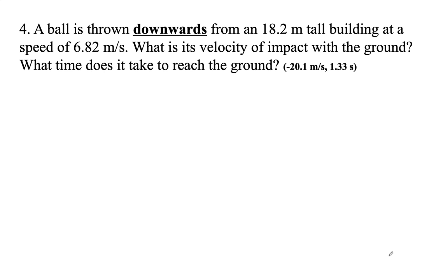A ball is thrown downward from an 18.2 meter tall building at a speed of 6.82 meters per second. Notice I carefully use the word speed here to not give away the sign. But if it's thrown downward, that's a negative velocity. And the fact that it goes from the top of the building down makes this displacement also negative.